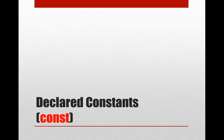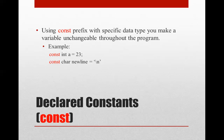There is another type of constant called a declared constant. We use the keyword const. Using a const prefix with a specific data type makes a variable unchangeable throughout the program. For example, const int a = 23 — a will always be 23 for the rest of the program and can never be changed. If you try to change it, the compiler will give an error. Similarly, const char NEWLINE = '\n' — that new line character will never change. Constant variables are completely like regular variables except you cannot modify them after initialization.